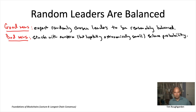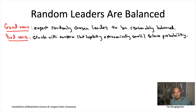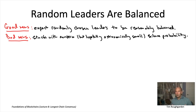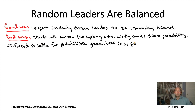By the same reasoning, with randomly selected leaders, there's no way to argue that longest chain consensus is guaranteed — meaning with probability one — to have those three properties. Consider finality: you want to consider a block confirmed after it winds up on the longest chain and gets extended a huge number of times, say a million times. There's some positive probability that the next million-and-one randomly chosen leaders are all Byzantine nodes, in which case they may well roll back your block.